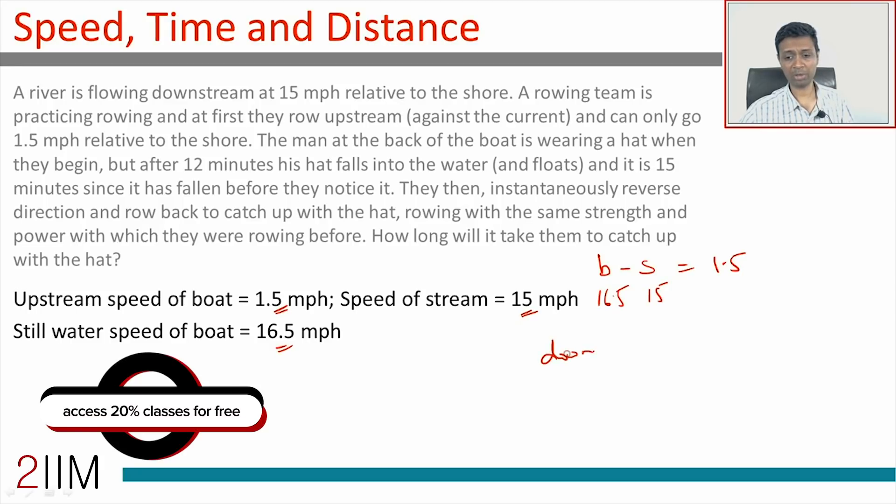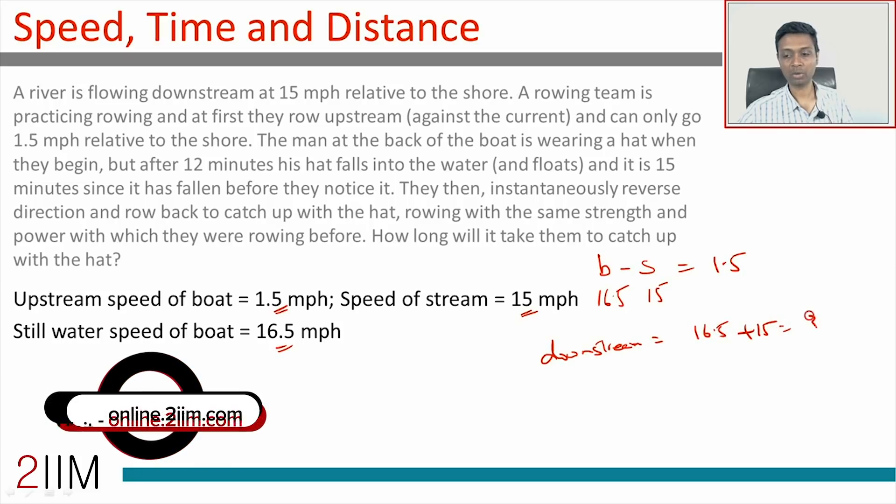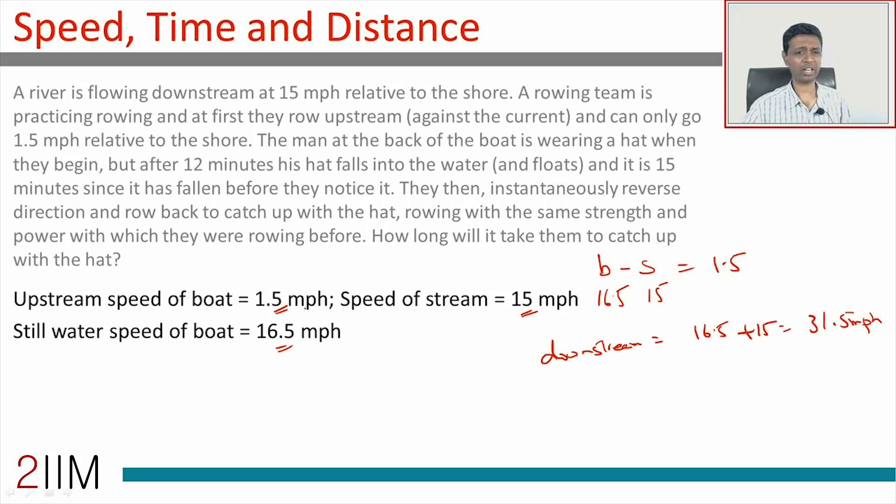Downstream speed, we're going to calculate it at some point of time. It's going to be 16.5 plus 15, which is 31.5 miles per hour. Let's keep this in mind. Still water speed of the boat is 16 and a half miles per hour.